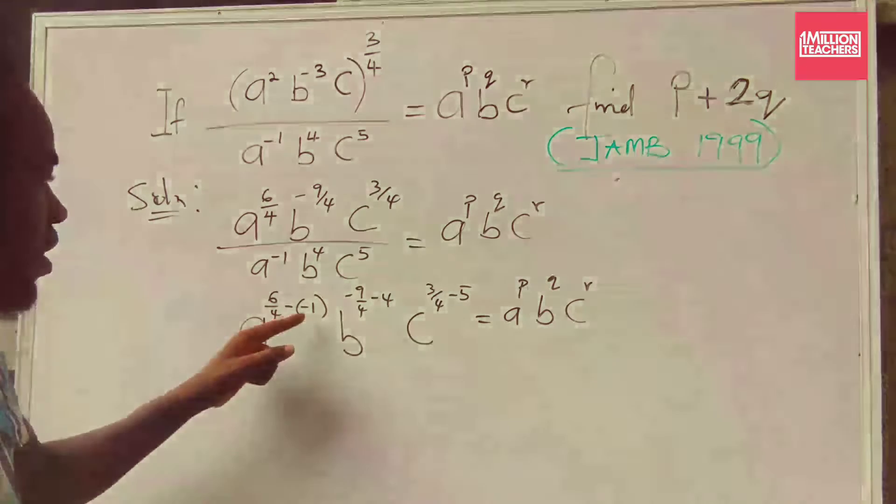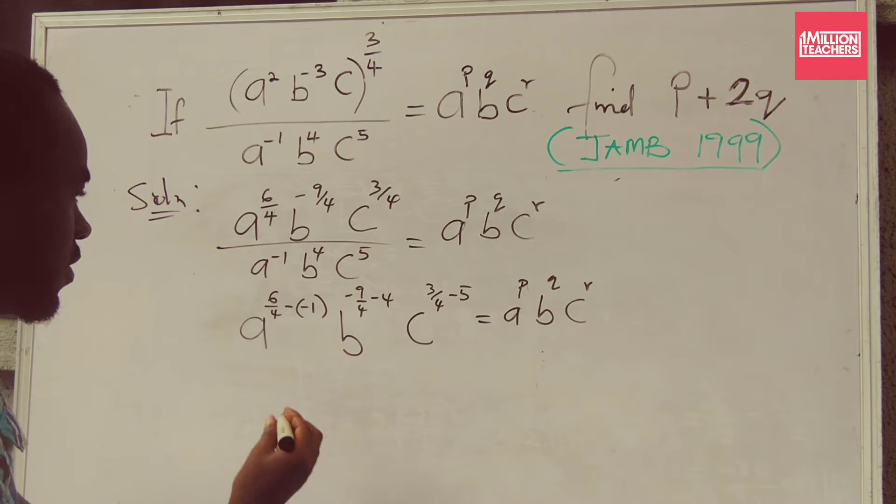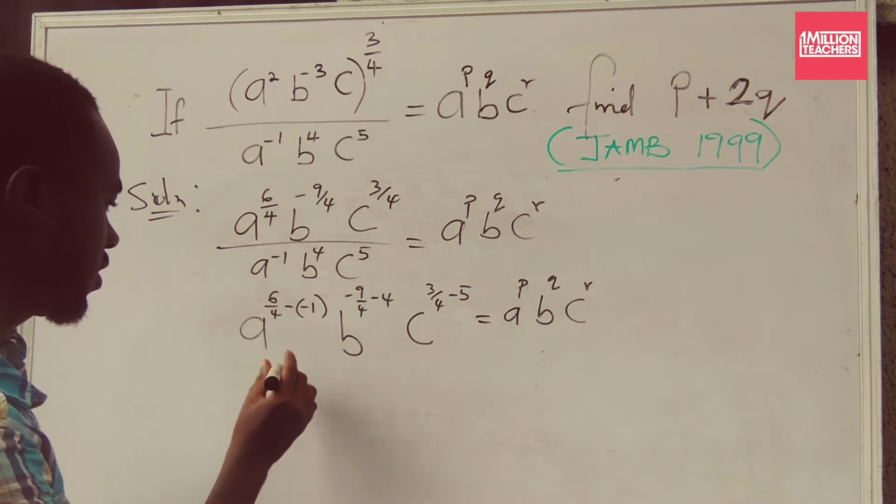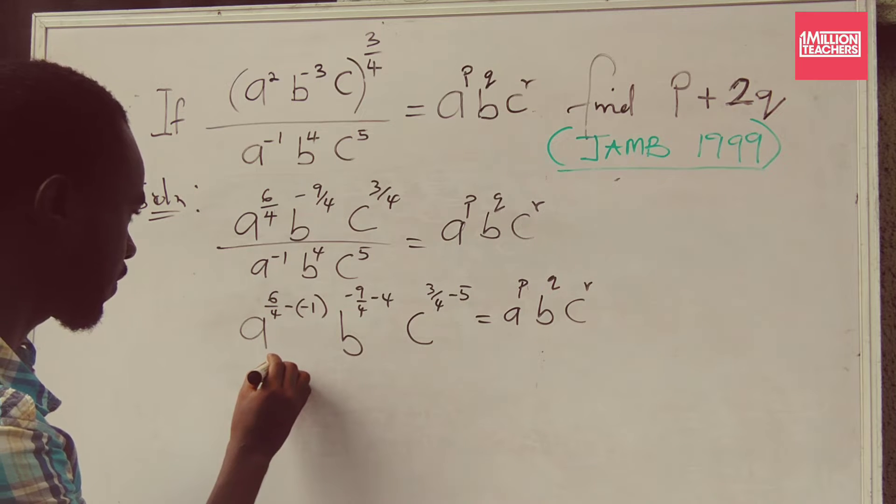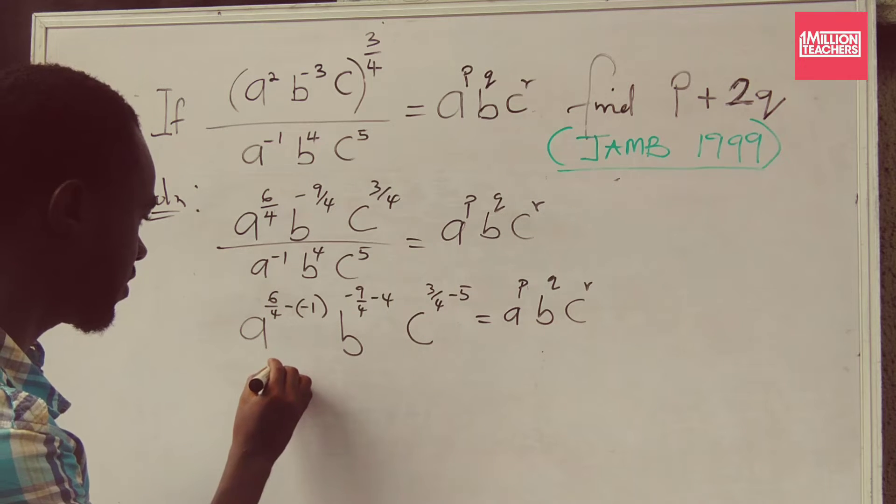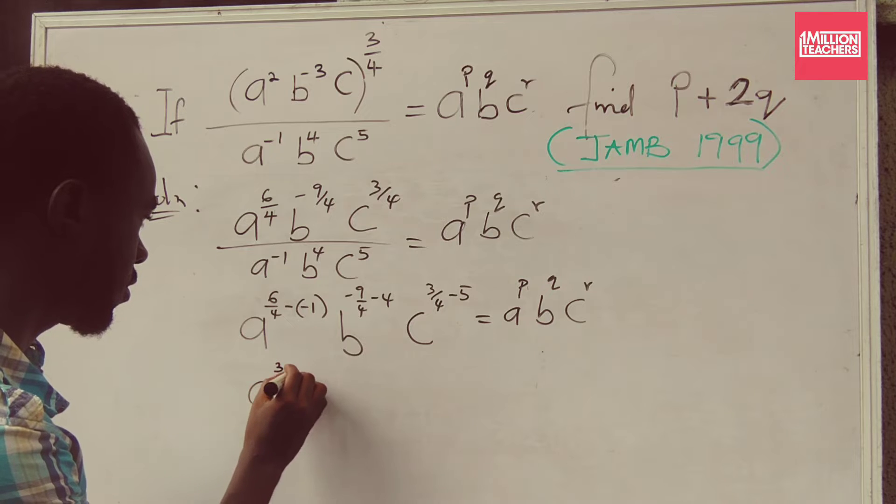So the next I'm going to do, I'm going to simplify out. So this is going to give me A to the power of, this is 3, sorry, yeah, this is 3 over 2 plus 1.